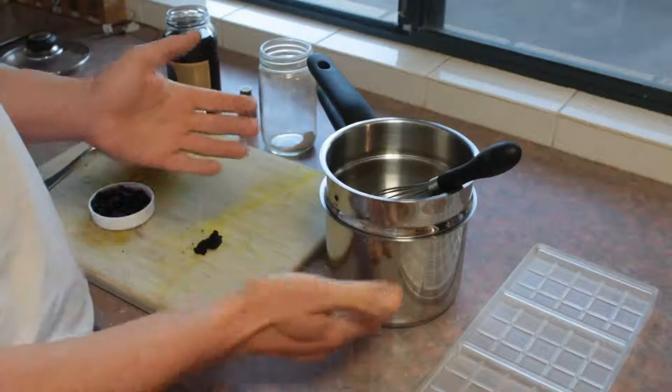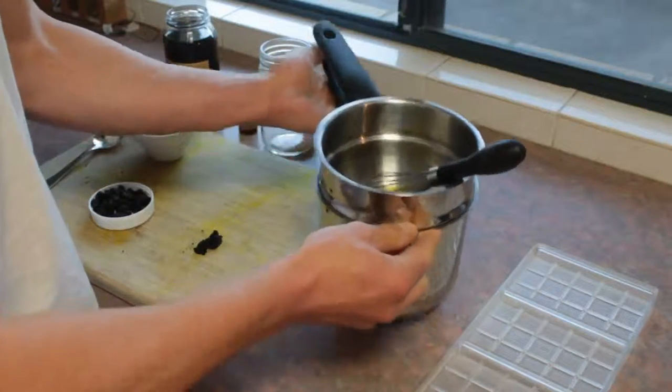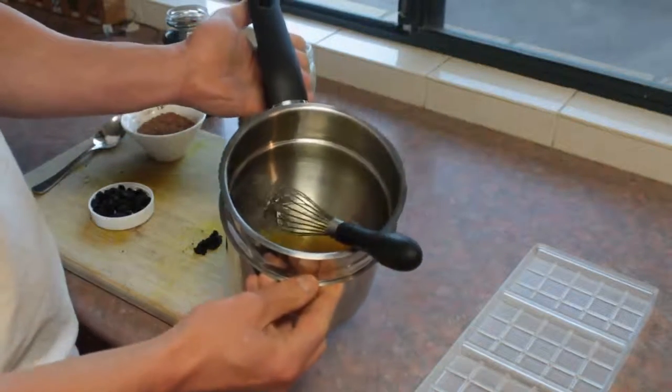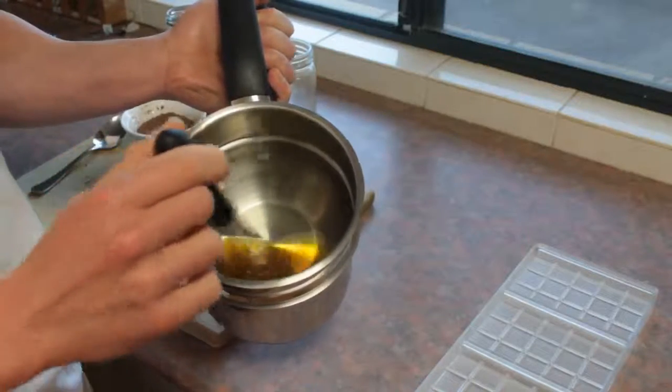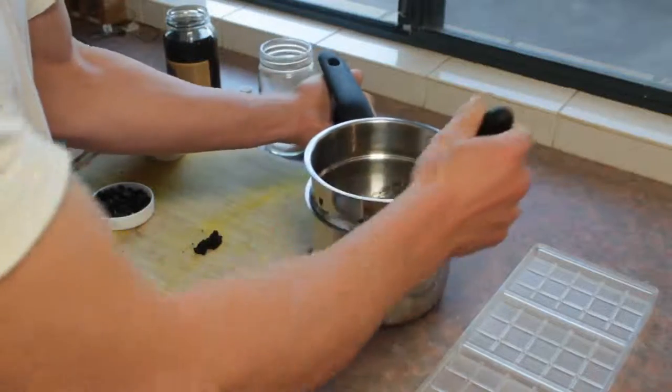And I just use a double boiler, fill it with some boiling water and then I melt the cacao butter in it. As you can see it's quite liquid now, it's all nice and ready to take all the ingredients.